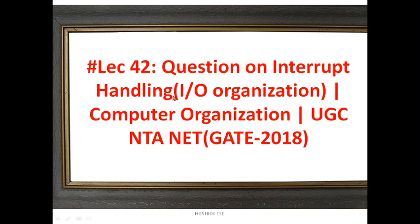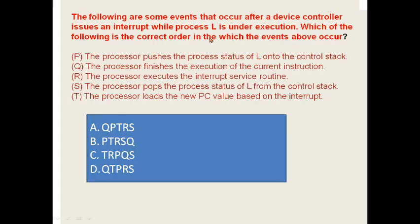Let's go for today's session. The question is: here are some events that occur after a device controller issues an interrupt while process L is under execution. Which of the following is the correct order in which the events occur? You all know what an interrupt is — an interrupt is a signal required whenever executing a process in the computer. This concept is somewhat different from the area of operating systems, but also applies in computer architecture.